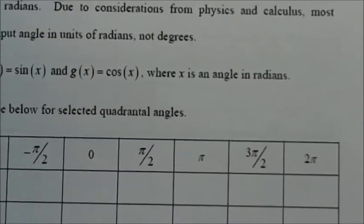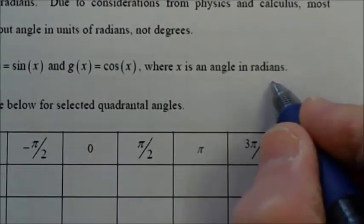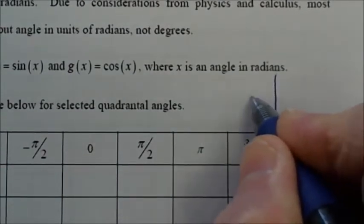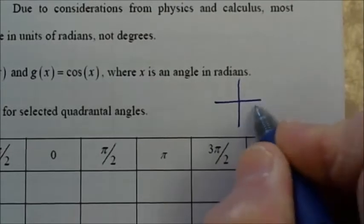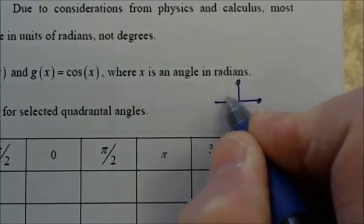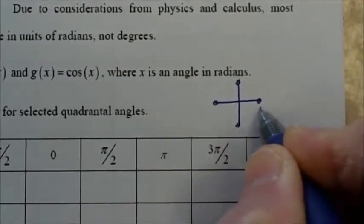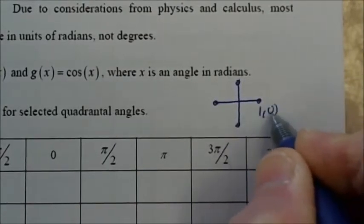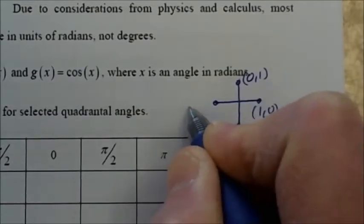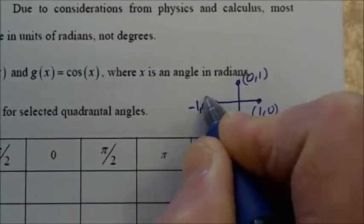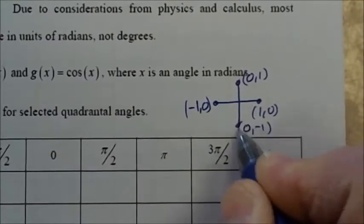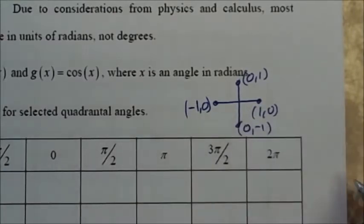Let's draw a quick sketch of our unit circle, putting down the four points: (1, 0), (0, 1), (−1, 0), and (0, −1).